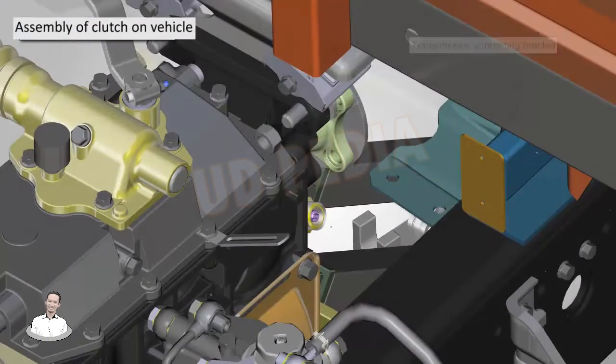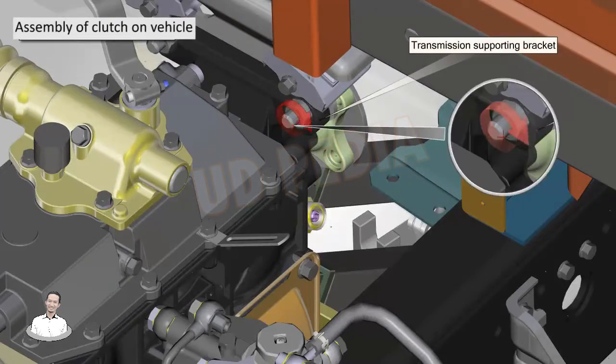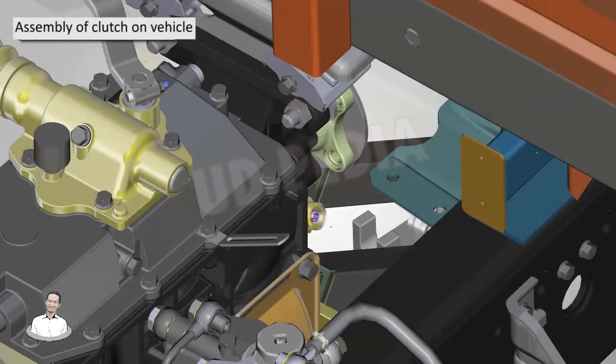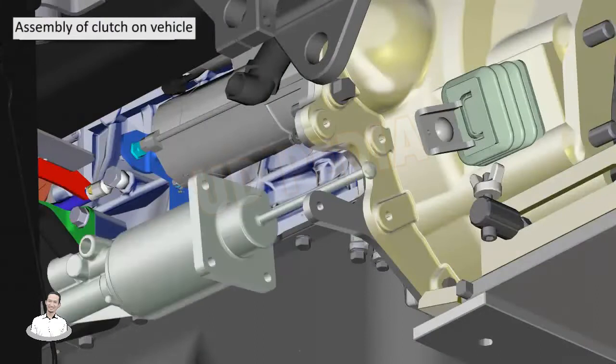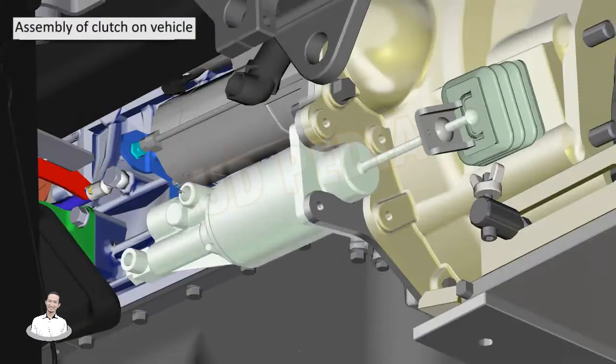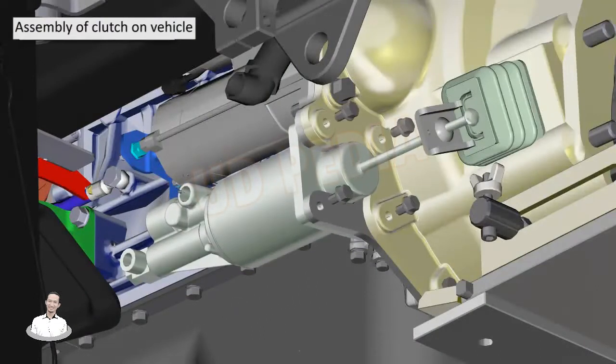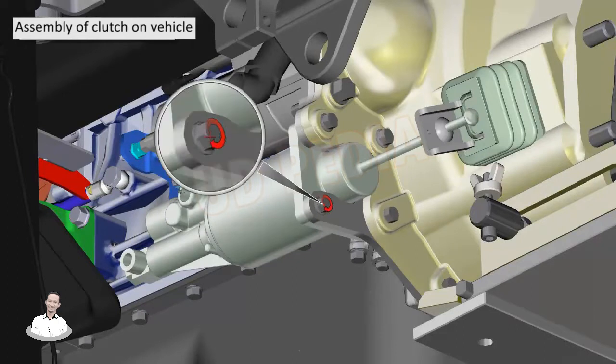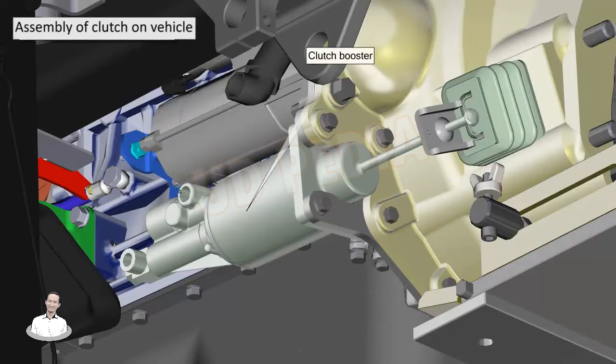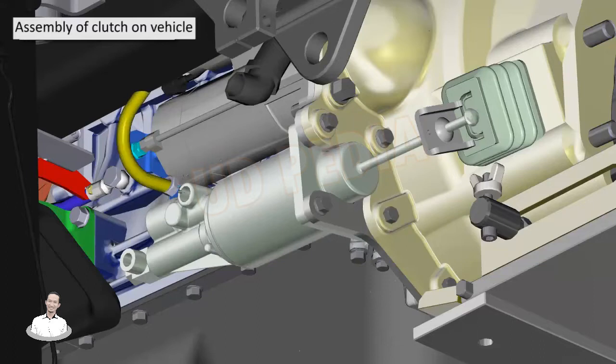Place and tighten all the bolts of the clutch housing bracket to the transmission. Position and connect the clutch booster to the transmission, then connect the pipings of the clutch booster.